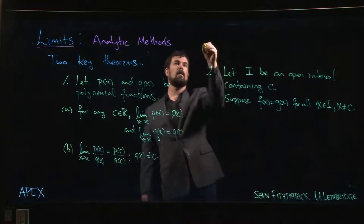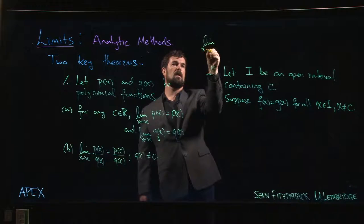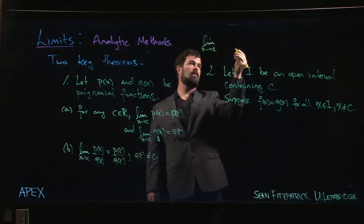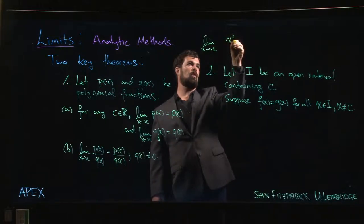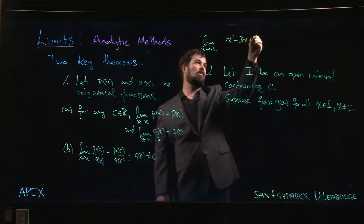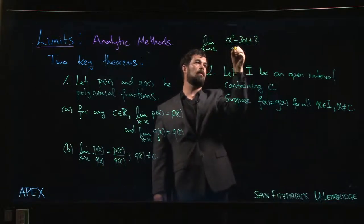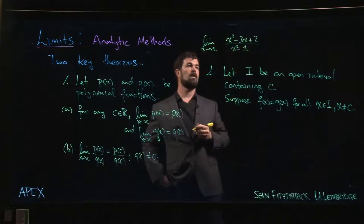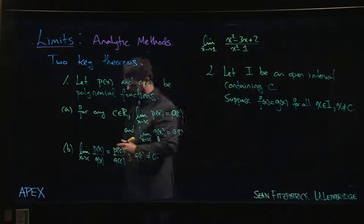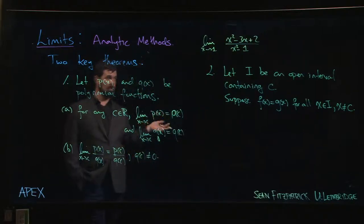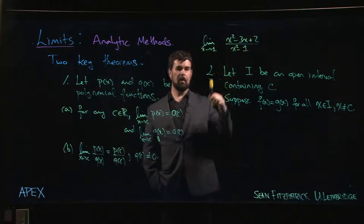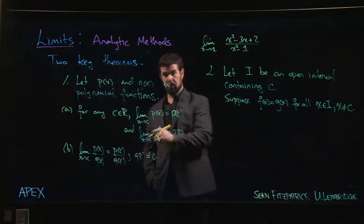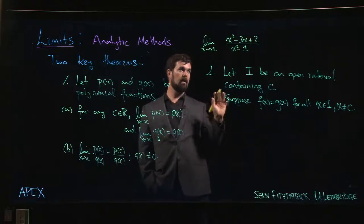Now where that comes into play is suppose you're doing something like the limit as X approaches one of X squared minus three X plus two over X squared minus one. Of course you can't apply this first theorem because although you have a polynomial on the top and a polynomial on the bottom, if you try to plug in X equal to one, you get zero. The polynomial on the denominator is equal to zero at one, so we can't apply this here.